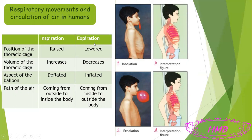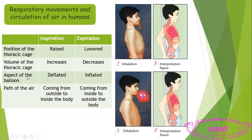Let's see the difference between the two movements — inhalation, or inspiration, and exhalation, or expiration. Starting with the position of the thoracic cage: in inspiration the thoracic cage is raised, it goes up. In expiration or exhalation, the thoracic cage is lowered, it goes down. Regarding the volume of the thoracic cage: in inhalation it increases, while in expiration it decreases.